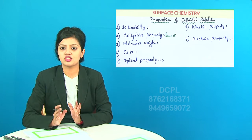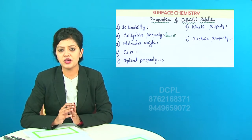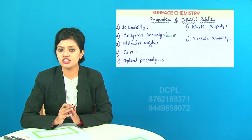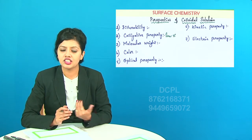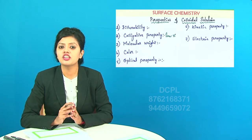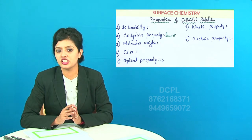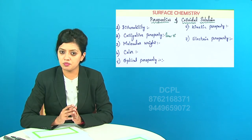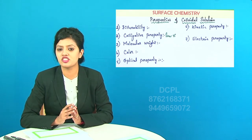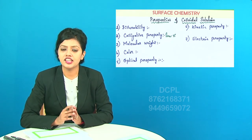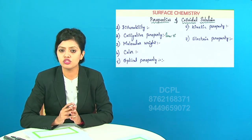The next property is molecular weight. Since the sol is made up of an aggregation of many particles, the colloidal solution has high molecular weight. Moving on to color: the color of the colloidal solution is purely based on the size of the dispersed phase particles, but not on the nature of the dispersed phase or the dispersed medium.